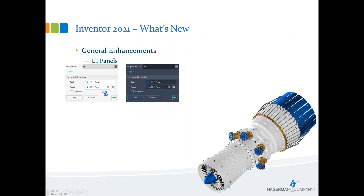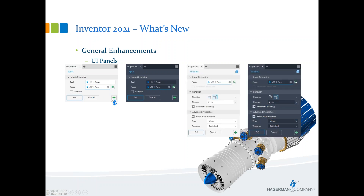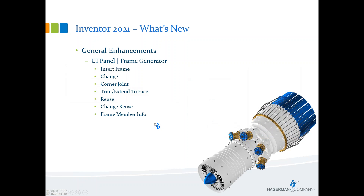The split command follows the same pattern: what are we splitting — a face or a solid — are we doing all faces? Light and dark theme supported. The thicken command asks whether we're going inside or outside, which faces, automatic face chain, and what tolerance. All features previously available in dialog boxes are now accessible inside the UI panels as well.